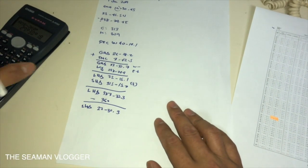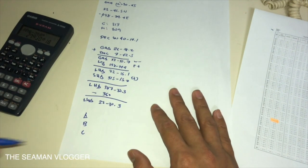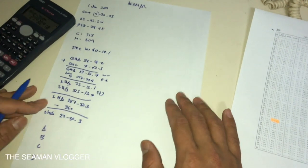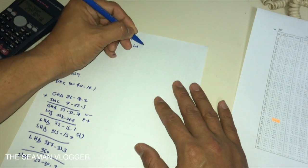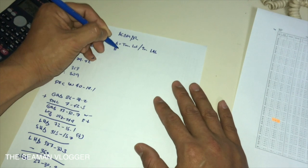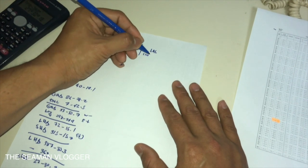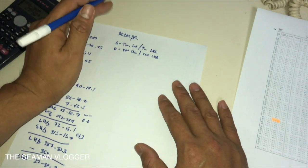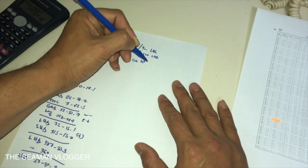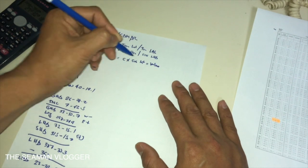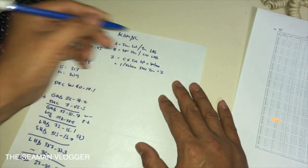This is the ABC table. The formula: A equals tangent latitude divided by tangent LHA. B equals tangent declination divided by sine LHA. And for C, just plus or minus of the A and B. Then Z: C times cosine latitude. The value equals 1 divided by the value, inverse tan equals to C.